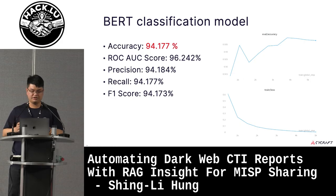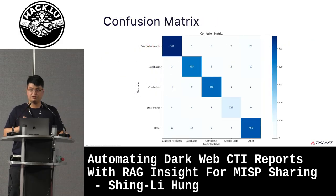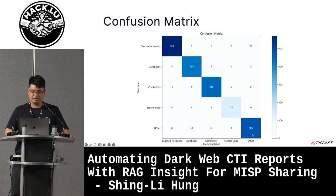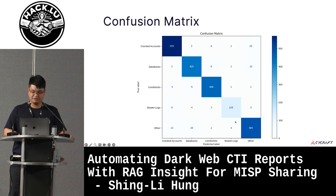Other metrics such as precision, recall, and F1 score achieve similar results. The confusion matrix shows the classification result for each category — the horizontal axis represents predicted categories and the vertical represents actual categories. Darker color means more correct classifications. Cracked accounts and other categories are very dark, meaning our model predicts them well. Stealer logs appear lighter in color, but the misclassified results are actually rare — the lighter color is due to the smaller number of posts in that category.